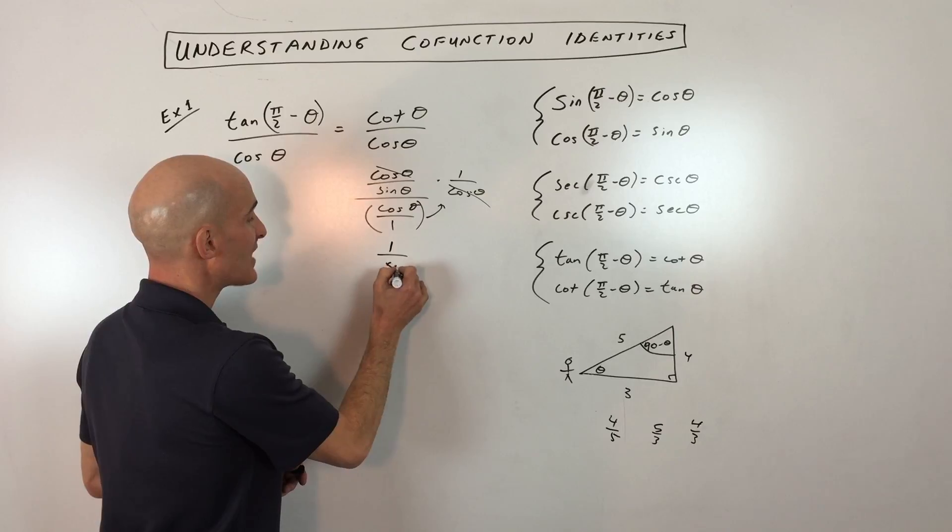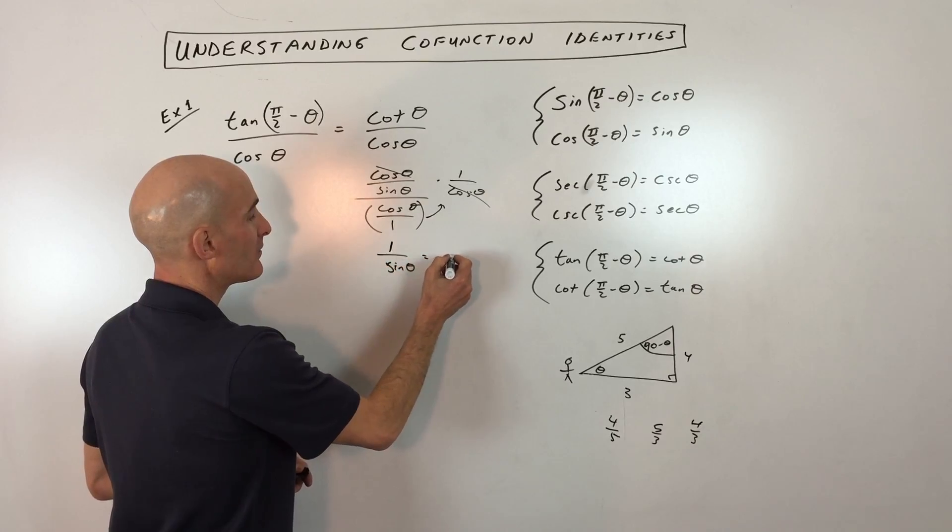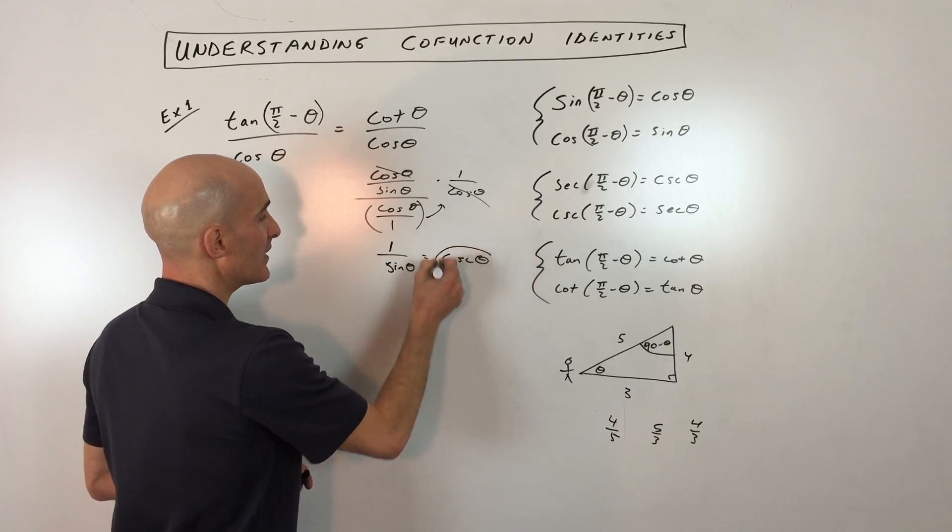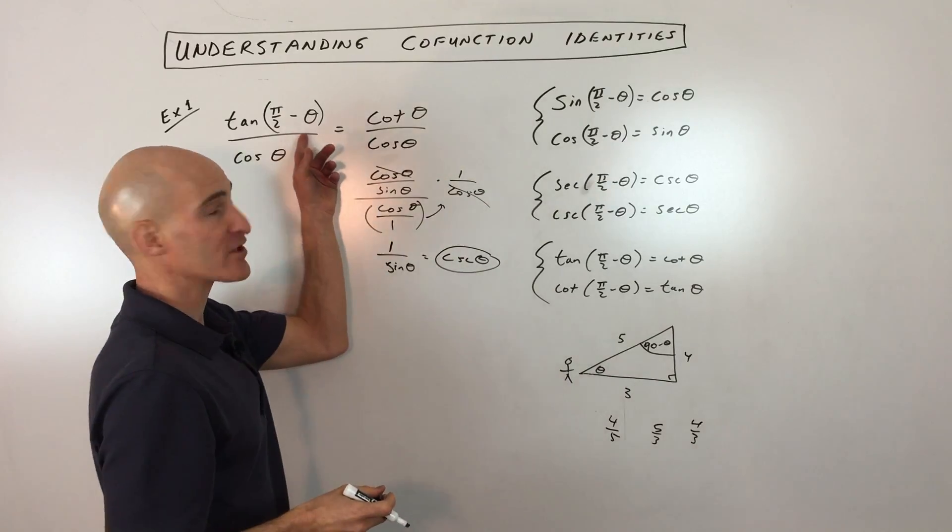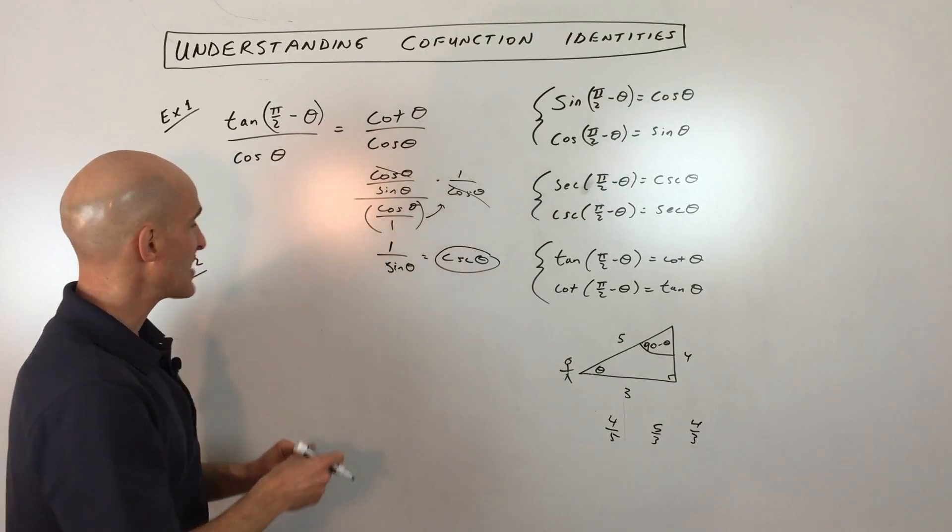Well, what does one over sine theta equal? Well, that equals cosecant theta. And we've simplified it down. So using cofunctions. Okay, let's look at another example.